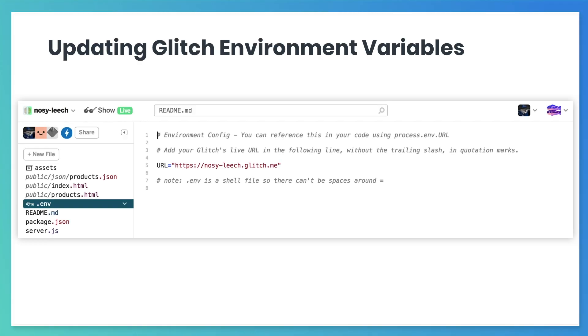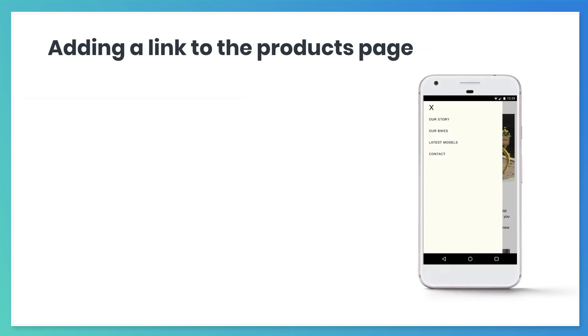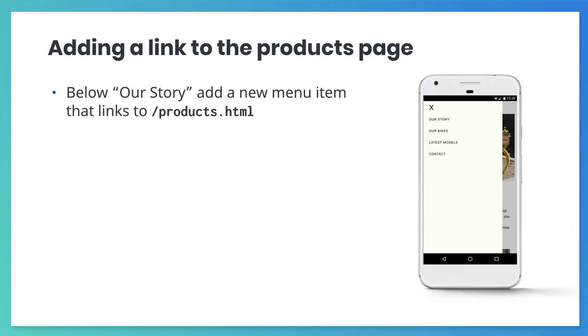Make sure you set up the environment variables in your Glitch repository - just follow the readme to do so. First, let's go ahead and make our products page accessible from our homepage by adding a link for the products page in the slide-out navigation.